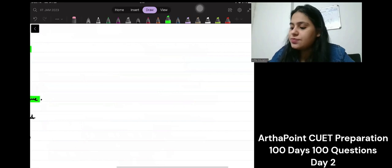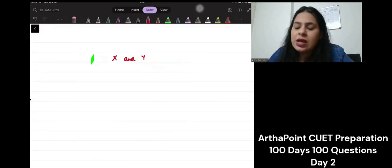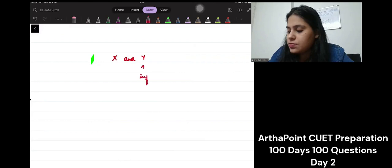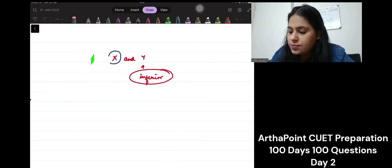Let us see if things are making some sense. If I think that there are two goods, X and Y, and Y is an inferior good, then the other good is a normal good, definitely.